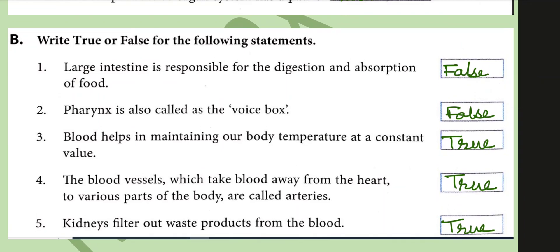True and False: The large intestine is responsible for the digestion and absorption of food — this is false. Pharynx is also called the voice box — false. Blood helps in maintaining our body temperature at a constant value — this is true. Blood vessels which take blood away from the heart are called arteries. Kidneys filter out waste products from the blood — this is true.